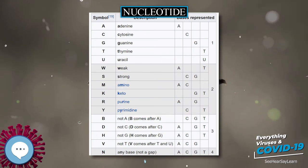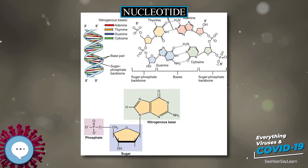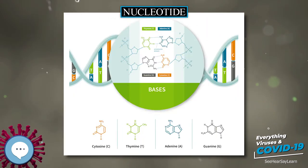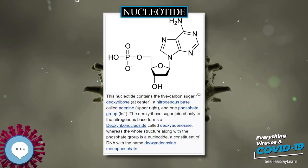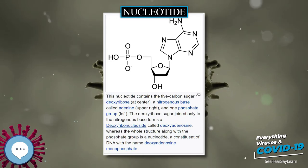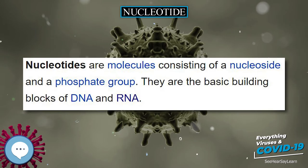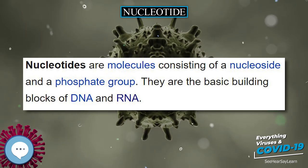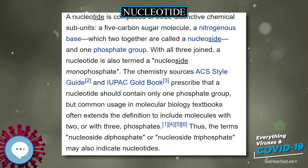With all three subunits joined, a nucleotide is also termed a nucleoside monophosphate. Chemistry style guides prescribe that a nucleotide should contain only one phosphate group, but common usage in molecular biology textbooks often extends the definition to include molecules with two or three phosphates. Thus, the terms nucleoside diphosphate or nucleoside triphosphate may also indicate nucleotides.